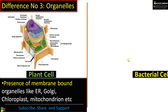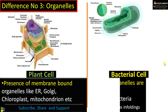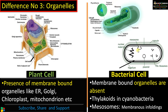Whereas in the case of bacteria, membrane-bound organelles are absent. However, cyanobacteria are a group of bacteria capable of carrying out photosynthesis. In that case, structures called thylakoids are present in cyanobacteria that are involved in photosynthesis. There is also a structure called the mesosome, which is an infolding of the plasma membrane, thought to be involved in DNA replication, cell division, and cellular respiration.